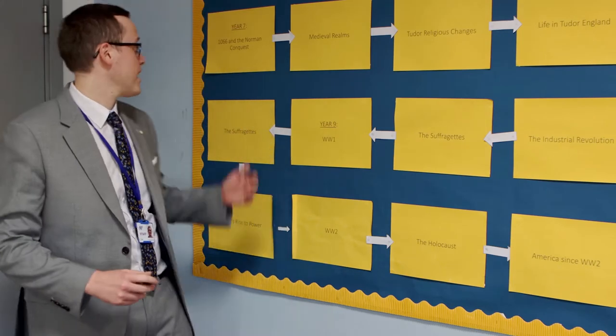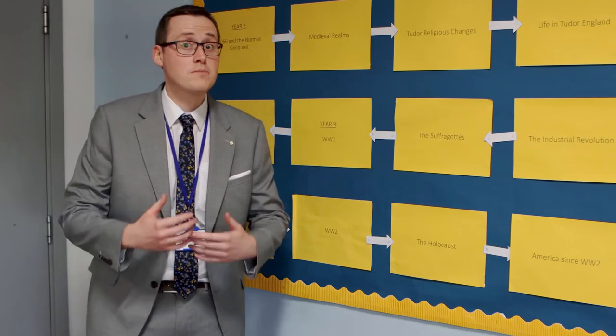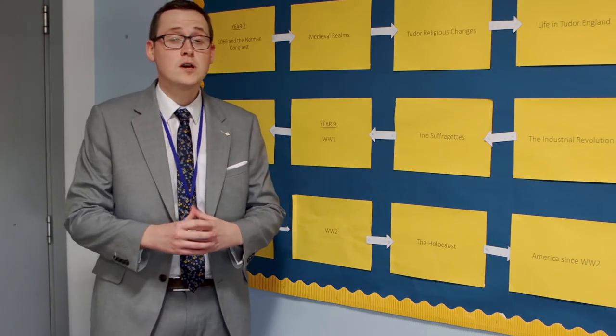Here at Newhouse Academy in History, we study a wide range of topics. We start off with 1066 and the Norman Conquest. We have a look at Britain pre-1066 in this module before moving on to the Battle of Hastings and why William became King of England.